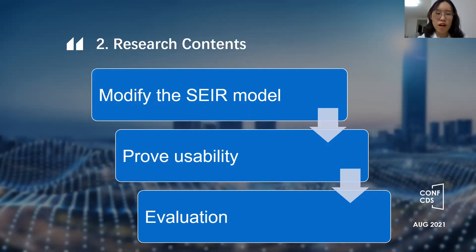The contents of this study include three parts. Firstly, we modified the ICIR model. Secondly, we proved the usability of the new model. Thirdly, we carry out numerical simulation and evaluate the effectiveness of some prevention measures.